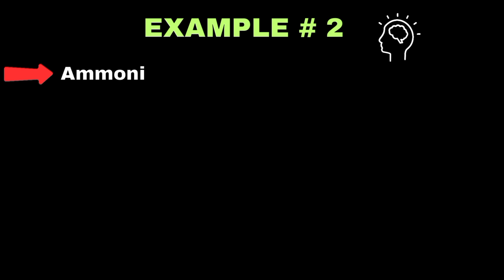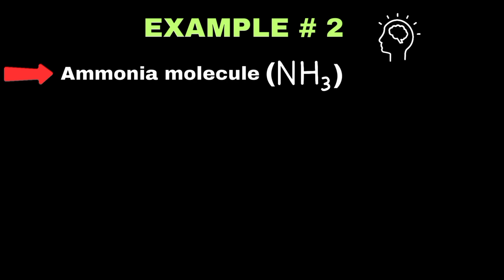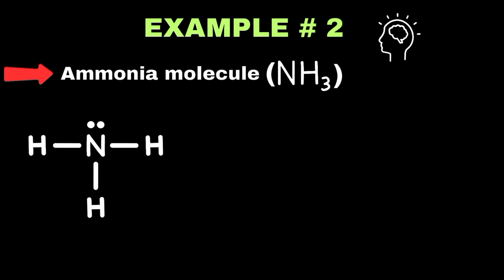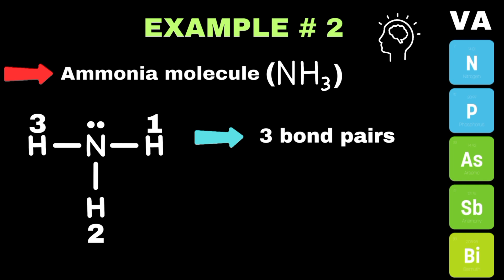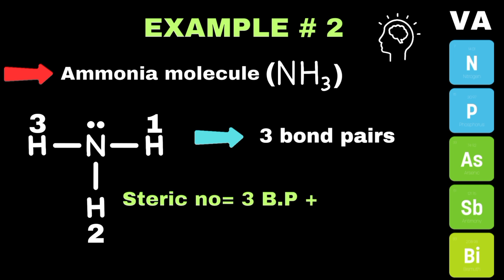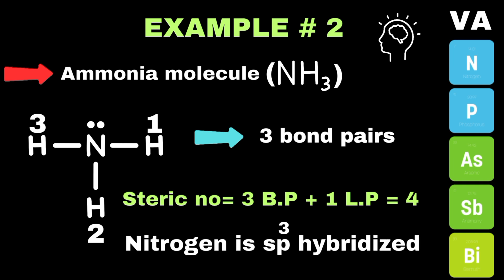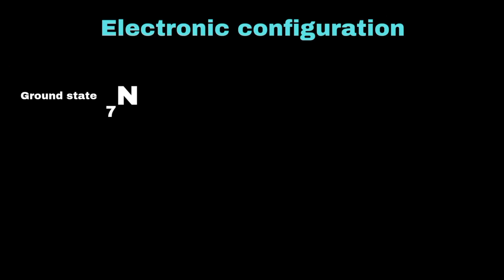Let's take one more example of sp3 hybridization — the ammonia molecule. By applying the steric number formula, nitrogen makes three single bonds with each hydrogen, giving three bonded electron pairs. Since nitrogen is in group 5A, it needs one lone pair to complete its five valence electrons. There are three bond pairs and one lone pair, giving a total steric number of four. This confirms that nitrogen in ammonia is sp3 hybridized.